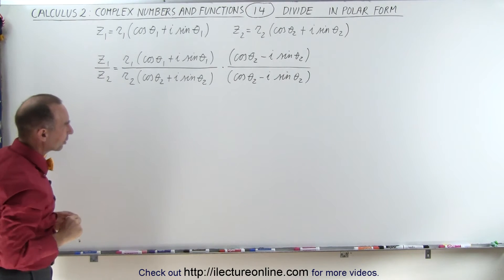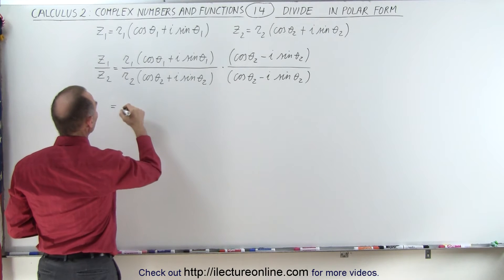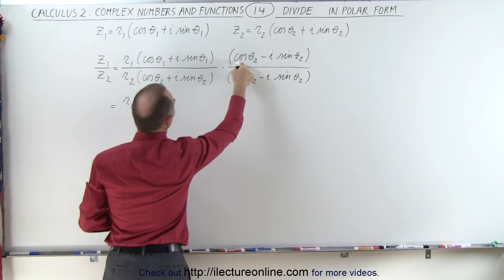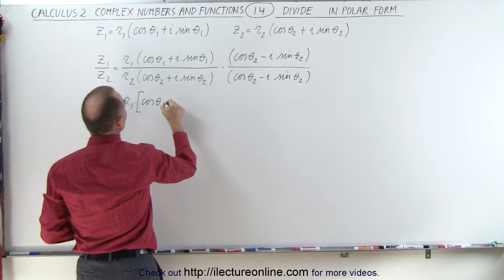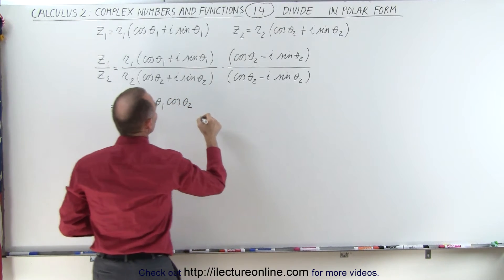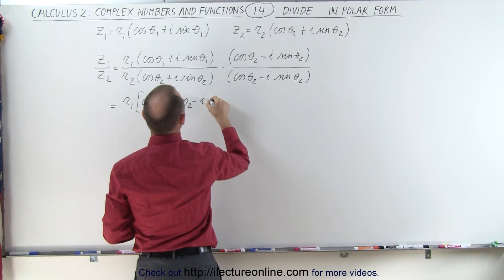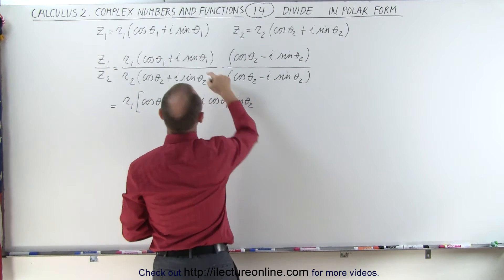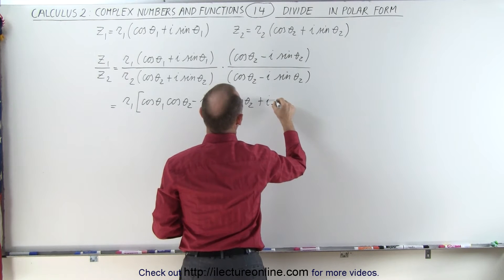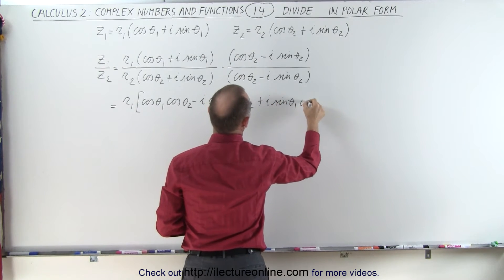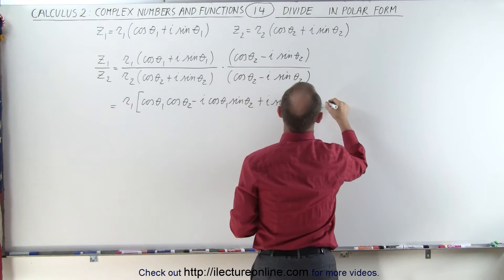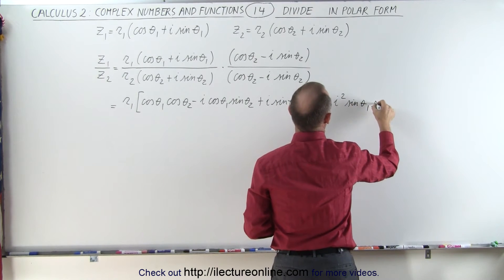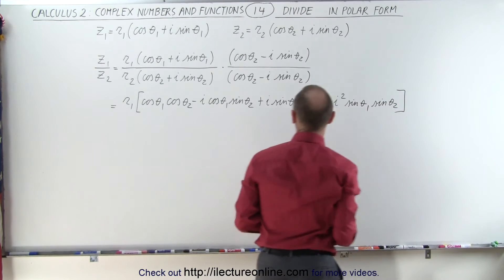But what does the rest of it look like? In the numerator we're going to get r1 times the cosine of theta 1 times the cosine of theta 2, minus i times the cosine of theta 1 times the cosine of theta 2, plus i times the sine of theta 1 times the cosine of theta 2, and then minus i squared times the sine of theta 1 times the sine of theta 2. That's quite a numerator.